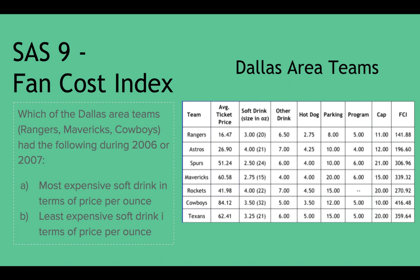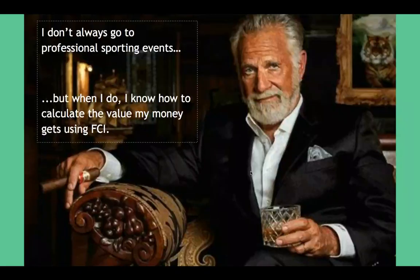Going back to the Spurs: $2.50 divided by 24 ounces is 10.4 cents per ounce — that's your least expensive. Most expensive is probably the Rangers or Astros at around 19 cents per ounce. The higher the ounces per dollar, the better the deal; the bigger the price per ounce, the worse the deal. Look at it from that perspective.